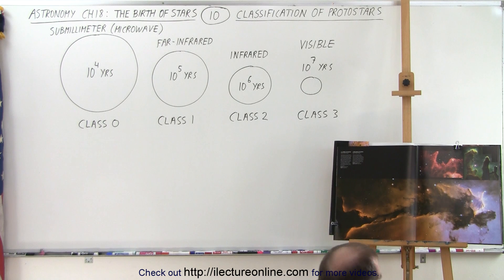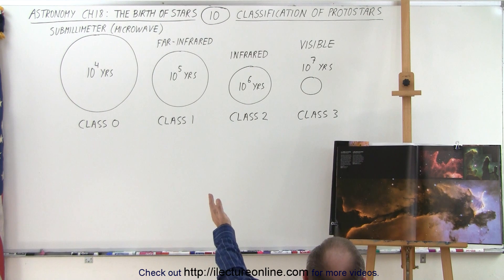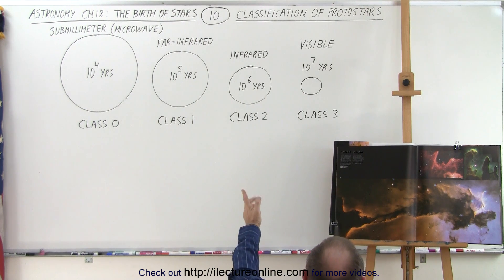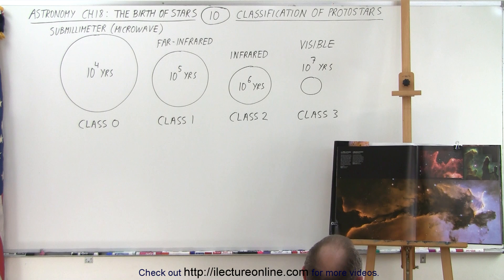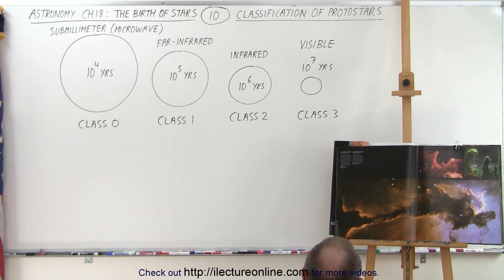Student: So it was visible — classes 0, 1, 2, and 3? Instructor: No. We only get far infrared, and infrared is not visible. The visible light is when you can actually see the disk. Student: How do you know what it is? How do they classify it as not visible? Instructor: Because we can take pictures of it in the infrared.